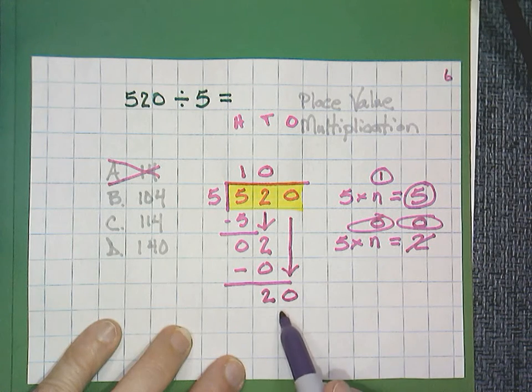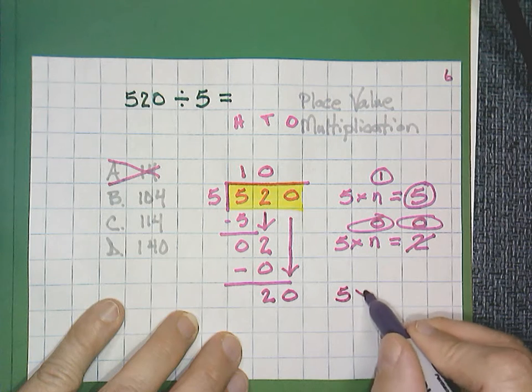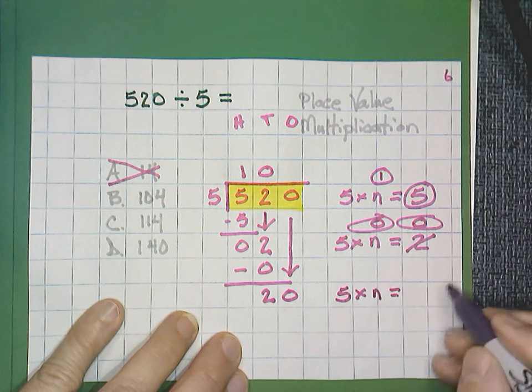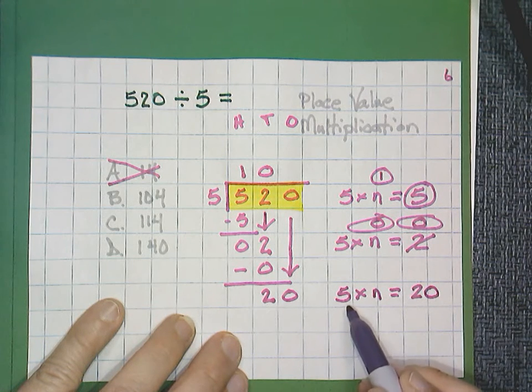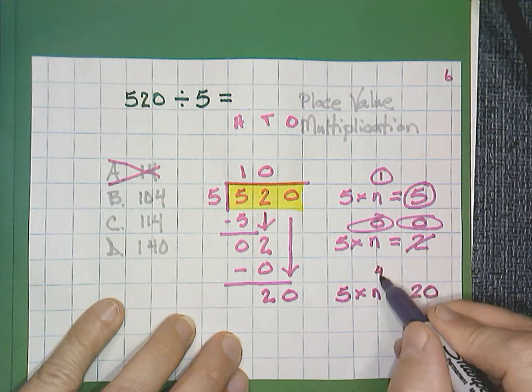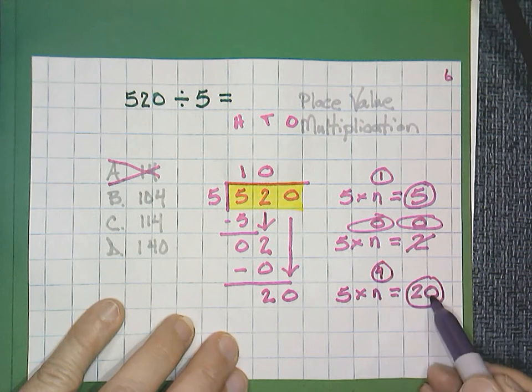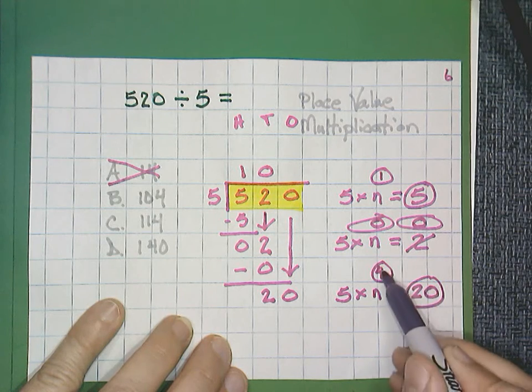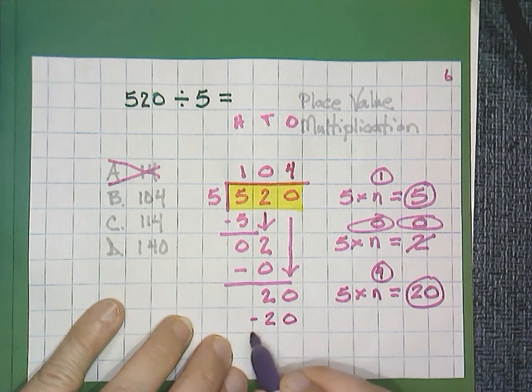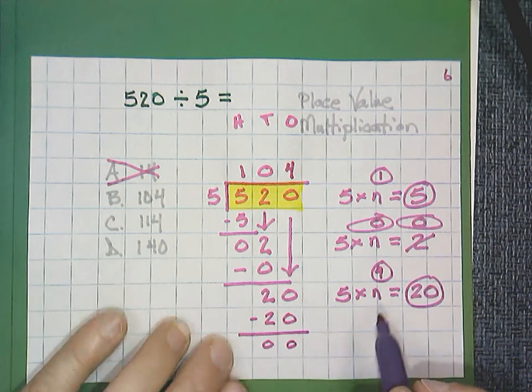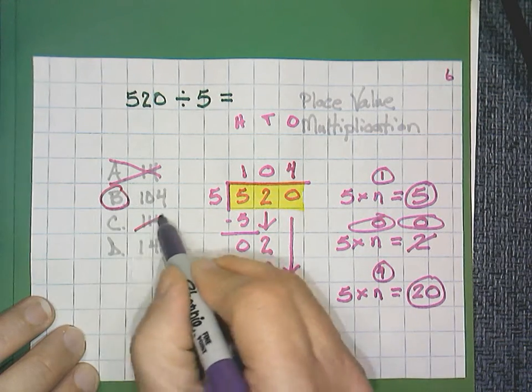Now, I'm going to bring this 0 down and rewrite the 0 here. And now I have 20 divided by 5. Or in other words, if we use our multiplication, 5 times n equals 20. This time, n is going to be 4. Because 5 times 4 is equal to 20. I circle both numbers and I'm going to use both numbers. 20 on the bottom. I will have no remainder. And my quotient is 104, which would be answer B.